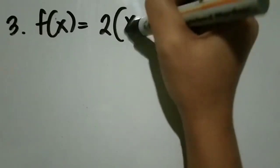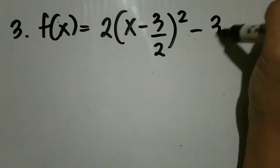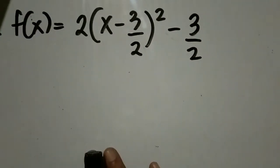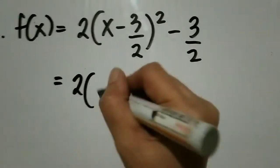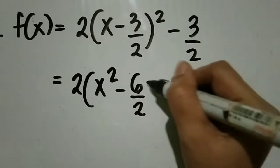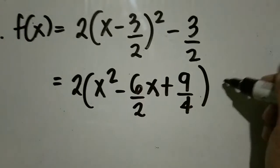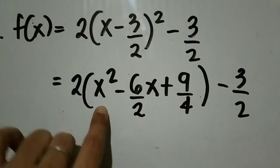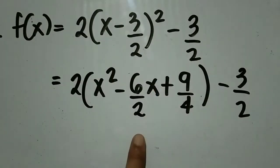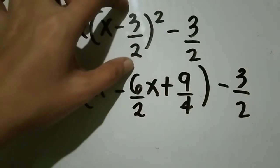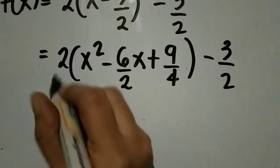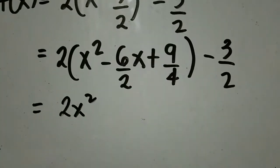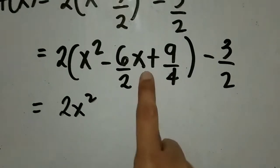Let's have number 3. Ang given natin ay f(x) = 2(x - 3/2)² - 3/2. I-transform natin siya into quadratic function. Square muna natin yung ating binomial: x² minus 6/2·x plus 9/4, minus 3/2. Square the first term: x². Then multiply the two terms times 2: negative 6/2·x. Then square the last term: positive 9/4.